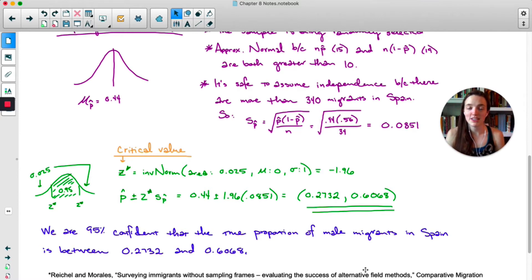What this means is we are 95% confident that the true proportion of male migrants in Spain is between 0.2732 and 0.6068. Remember this doesn't mean that there's a 95% chance that we've captured the true mean. We've either captured it or we haven't. There's two outcomes. The probability of getting it is either 1 or 0. What the 95% means is if we were to do this many, many, many, many times we would capture the true mean in about 95% of those intervals. So maybe we caught it here. Maybe we didn't. Hopefully we did.